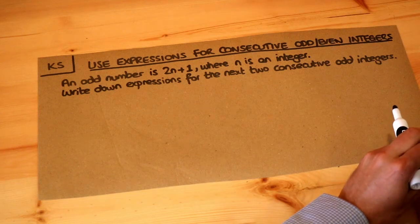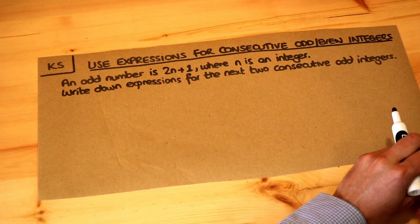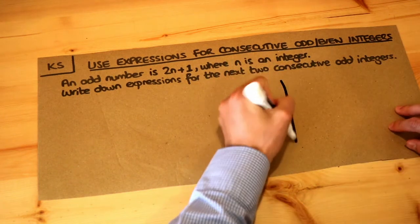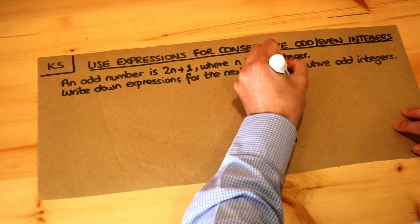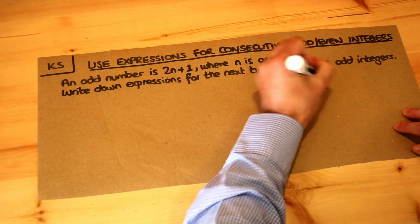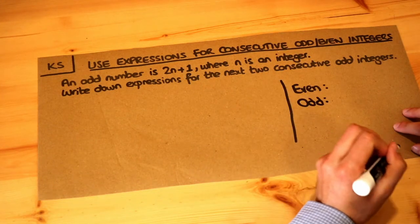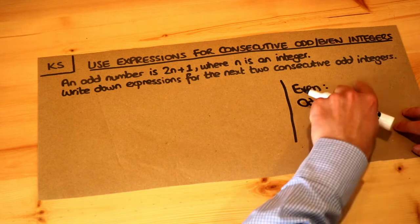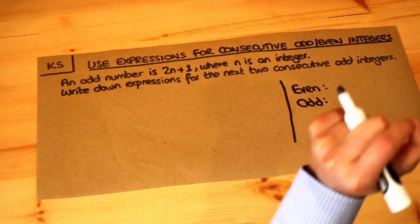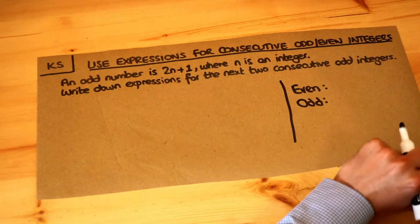Hello and welcome to this Dr. Ross-Mask key skill video on using expressions for consecutive odd and even integers. Remember from a previous video we saw how to represent even and odd integers in a generic way, because we don't want to give specific examples — we want some algebraic way that could represent any even or any odd number.